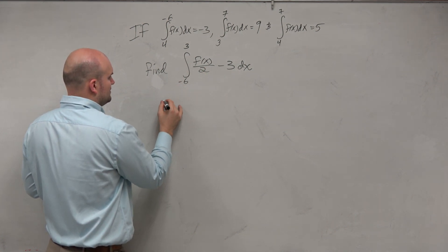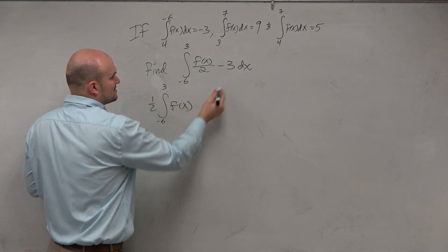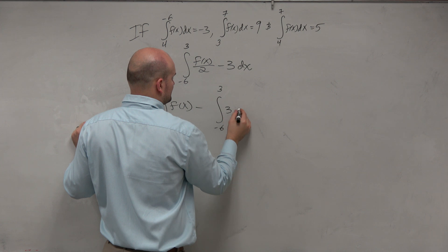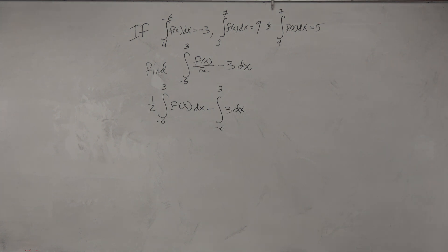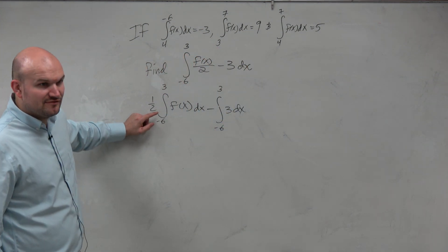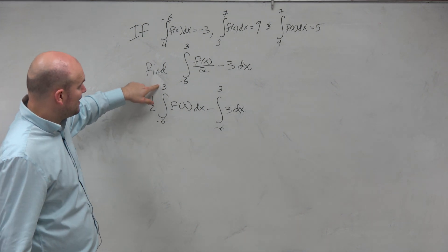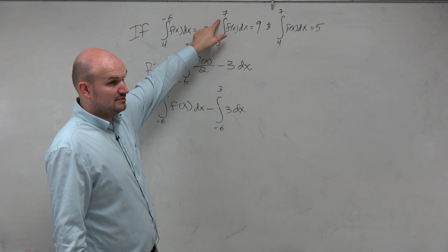Let's clean this up. Let's go and get that 1 half out of the way. So let's do from 3 to negative 6. Let's put a 1 half out there, f of x, and then let's subtract 3 to negative 6 of 3. Now let's try to see if we can follow this.